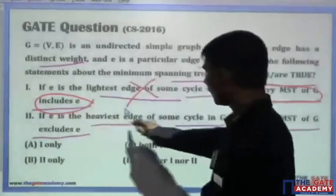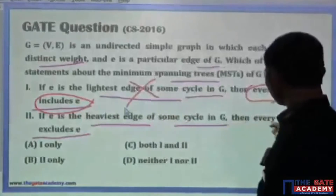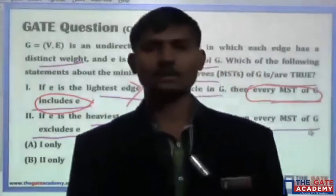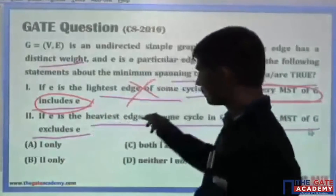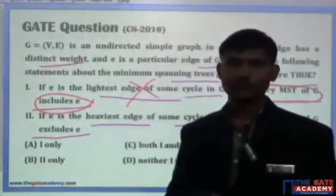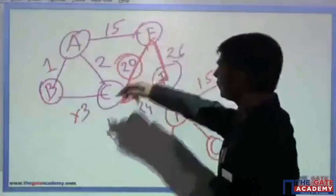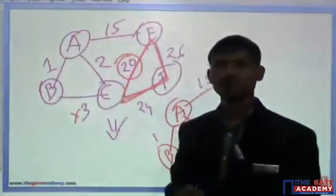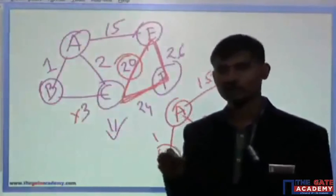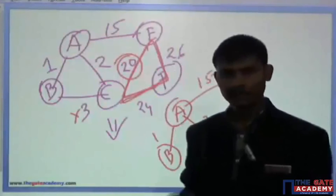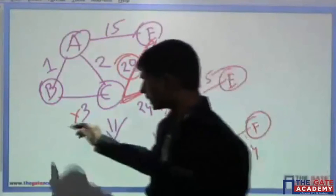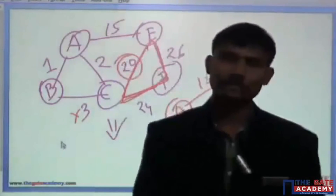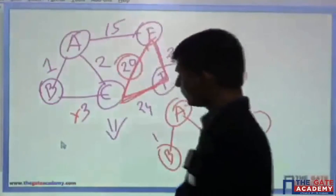The second statement — if E is the heaviest edge of some cycle in G, then every MST of G excludes E — is actually a true statement. The reason comes from the definition of the spanning tree. According to the property of the minimum spanning tree, we always look for the smallest edge, the edge with the least weight. If there is an edge with more weight, you will not select it. So naturally, this statement is true.